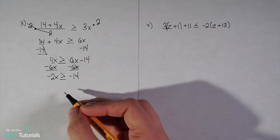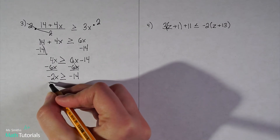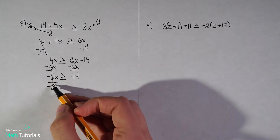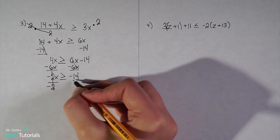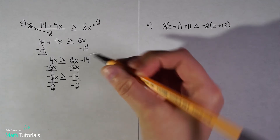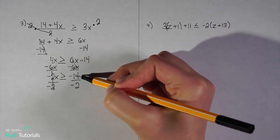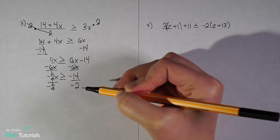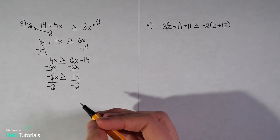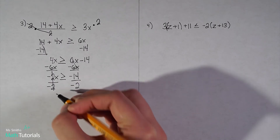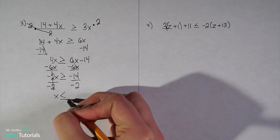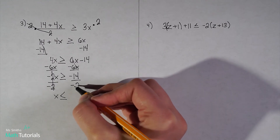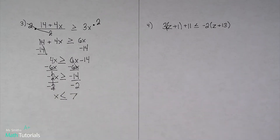My last step to isolate x is to divide out the negative 2. We're dividing across the sign with a negative number. It doesn't matter that the 14 is negative — it's only the number you're dividing by that matters. So since I'm dividing by a negative number, the sign flips. It was greater than or equal to, now it's less than or equal to. Negative 14 divided by negative 2 is positive 7.